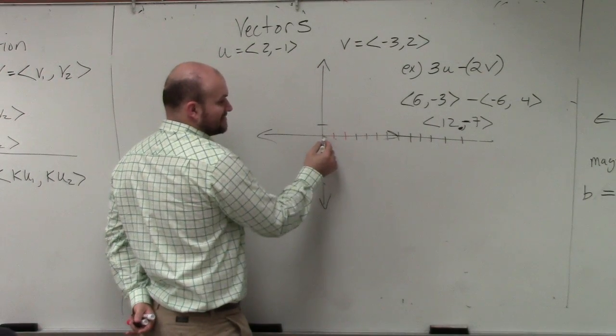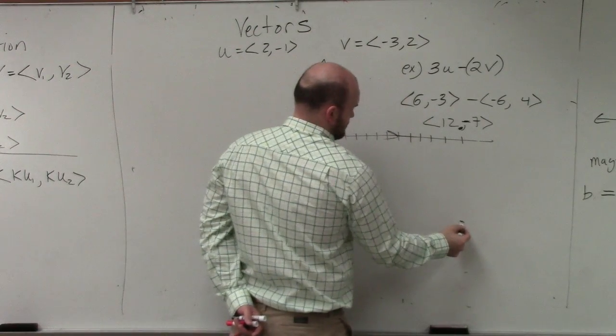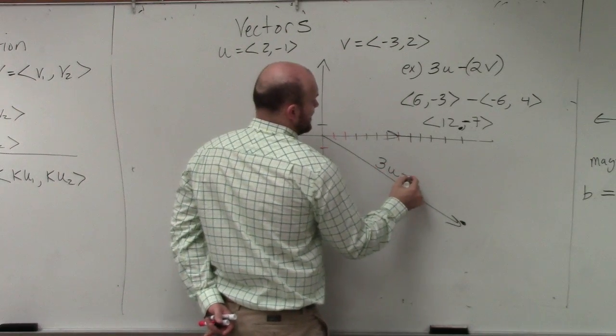So 12, and then going down 7: 1, 2, 3, 4, 5, 6, 7. And we would call this 3u minus 2v.